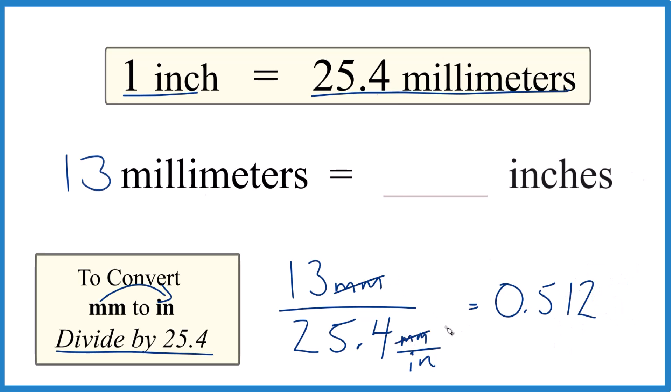that's millimeters canceling out, leaving us with inches, which is what we're looking for. So 13 millimeters equals 0.512 inches. That's pretty close to half an inch, so 13 millimeters is fairly close to half an inch.